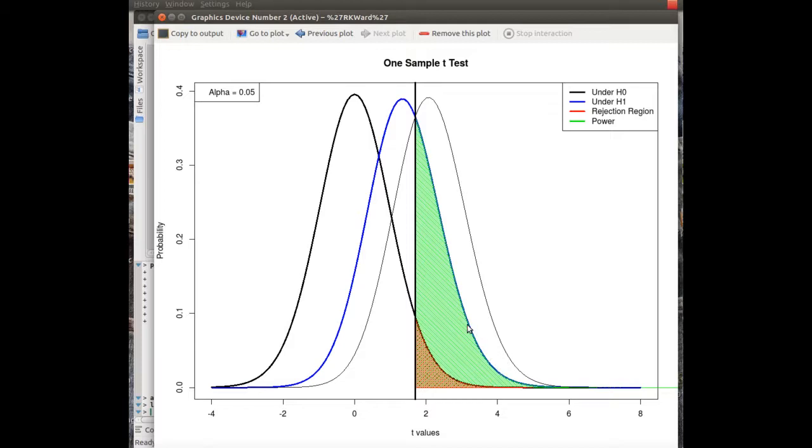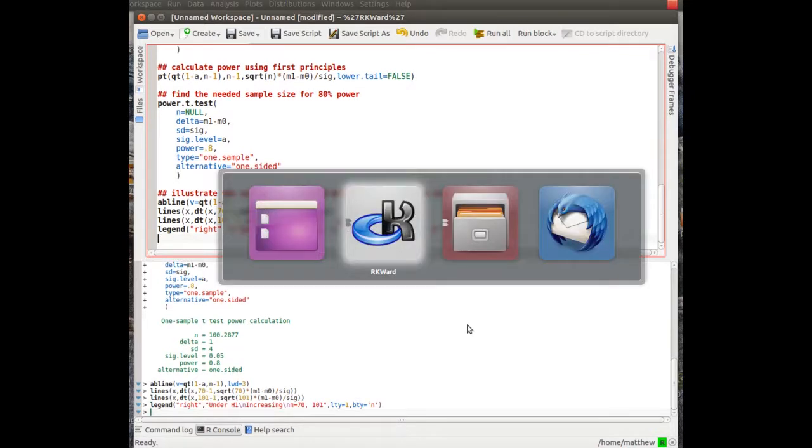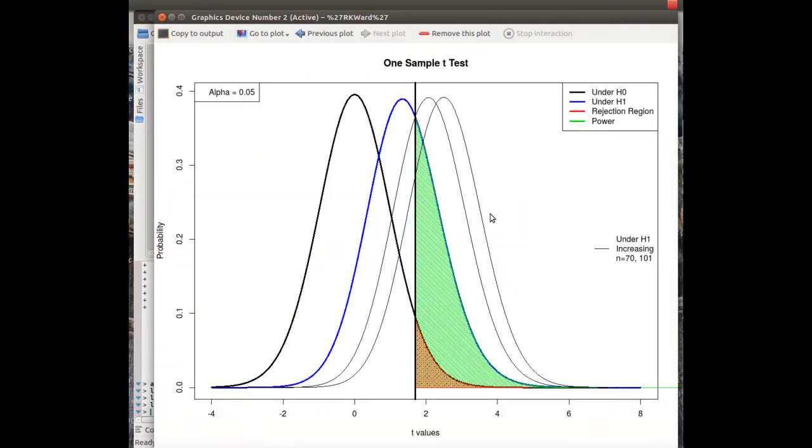We need 101 for it to be 80%. So the next one, let's look at n=101, and that's this distribution right here. So 80% of this curve, or 80% of the area, is shifted to the right, and that is power. That's what's happened graphically.